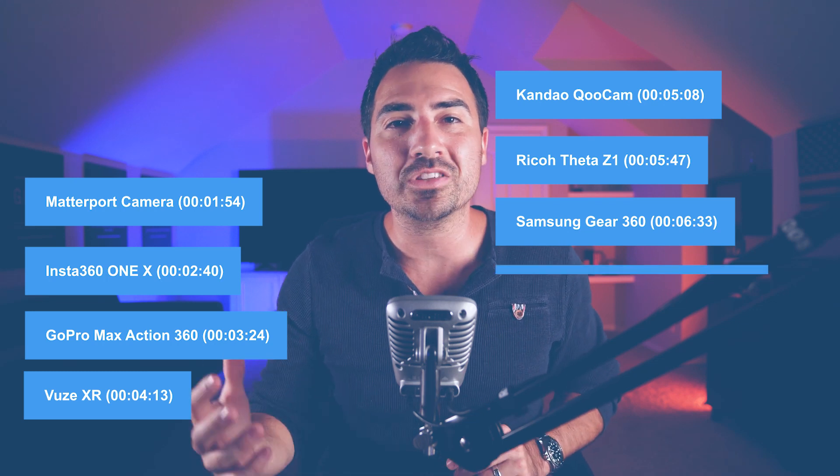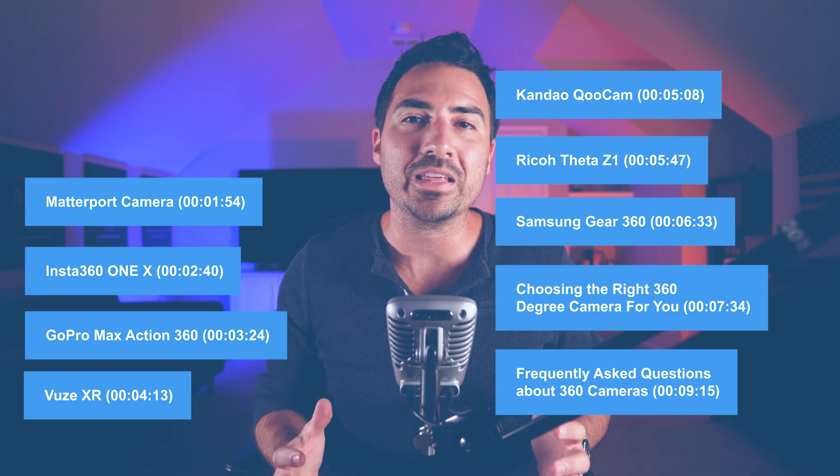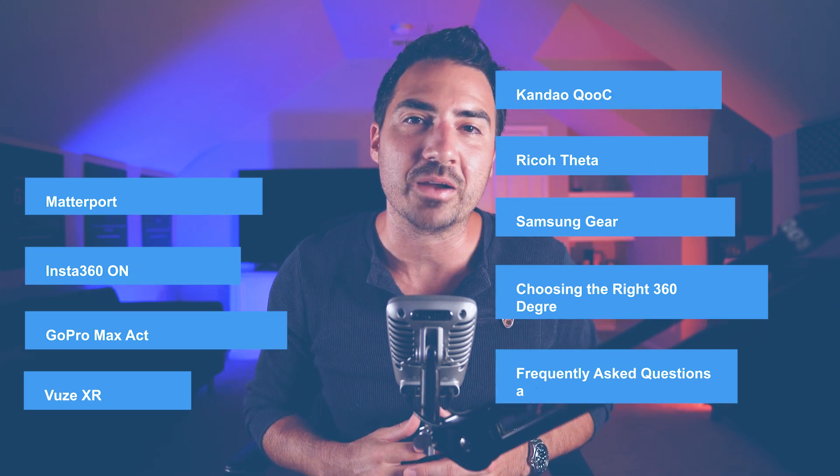First, we'll start out by talking about the Matterport camera. Then we'll get into the Insta360 One X, GoPro Max, Action 360, Views XR, the Kandao, the Qoocam, the Ricoh Theta Z1, and the Samsung Gear 360. We'll also talk about choosing the right 360-degree camera for you, and finally we'll finish up with some frequently asked questions about 360 cameras.